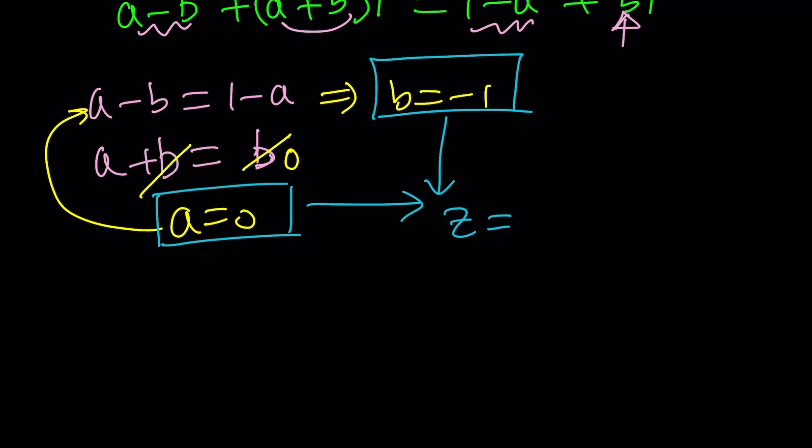A equals zero, B equals negative one implies that our complex number Z is A plus BI. That means no real part, but only the imaginary part. And that is negative one I, or I can write it as negative I. Interesting. Such a simple solution to this problem. Let's go ahead and take a look at the second method.